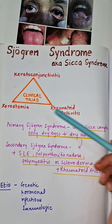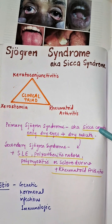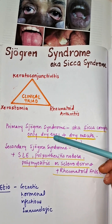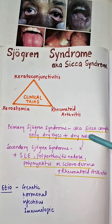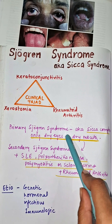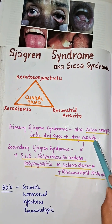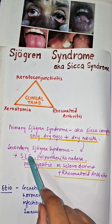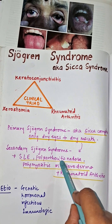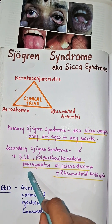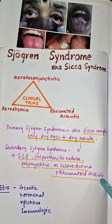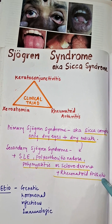Primary syndrome, also known as Sicca complex, consists of only dry eyes and dry mouth presentation. In secondary syndrome, along with dry eyes and dry mouth, there is SLE, polyarteritis nodosa, polymyositis, or scleroderma, along with rheumatoid arthritis.